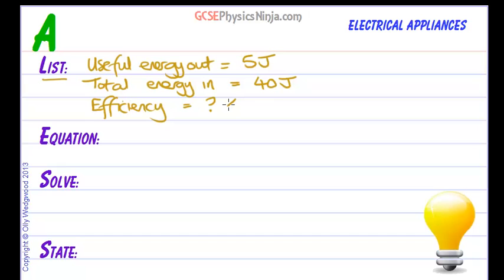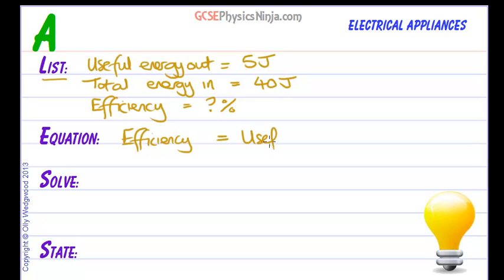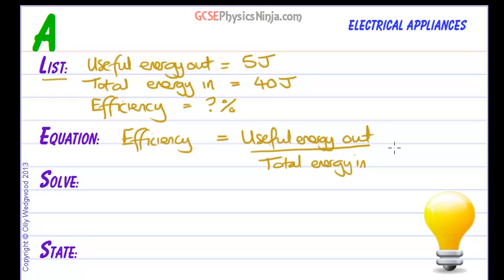We want the efficiency as a percentage. The equation — which you can get from your equation sheet, though it would also be very useful to learn — is that efficiency equals useful energy out divided by total energy in, and if we want it as a percentage we multiply by 100%.